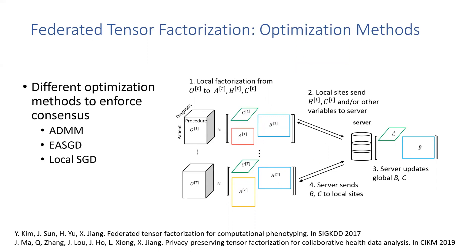Previously, we have developed the first two methods for federated tensor factorization with different optimization approaches: one based on ADMM, which enforces the consensus among the local feature factors using constraints, and one based on elastic averaging SGD or EASGD, which enforces the consensus using regularizations.